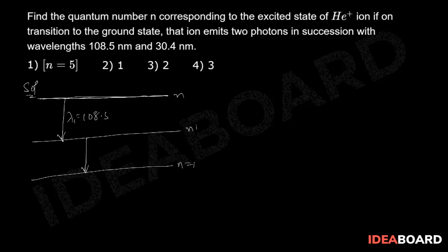We take one photon with wavelength 108.5 nanometers and the second photon with wavelength 30.4 nanometers. The energy of the photon emitted in the transition from n to intermediate level n dash is ΔE1, and from n dash to n=1 is ΔE2. The total energy released is ΔE = ΔE1 + ΔE2.